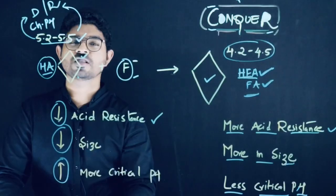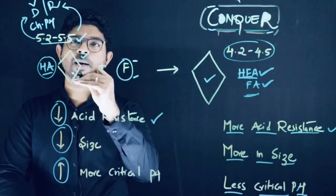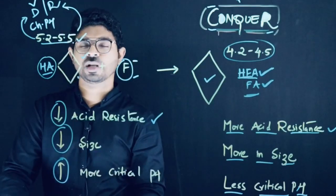Whenever the critical pH is below 5.2 to 5.5, there will be demineralization. Whenever it is above, it will be remineralized. I hope you know this concept.